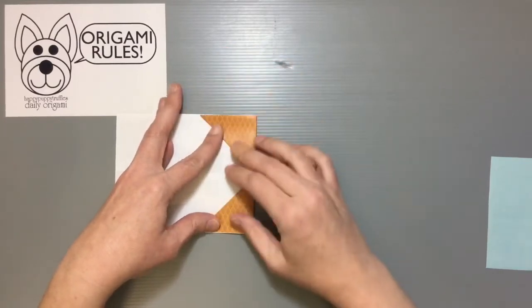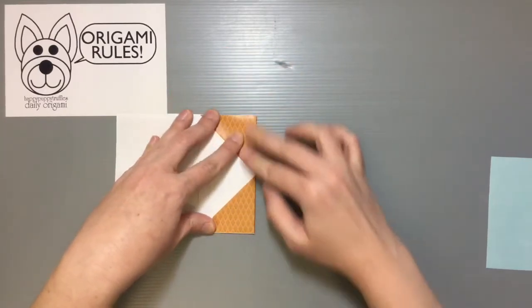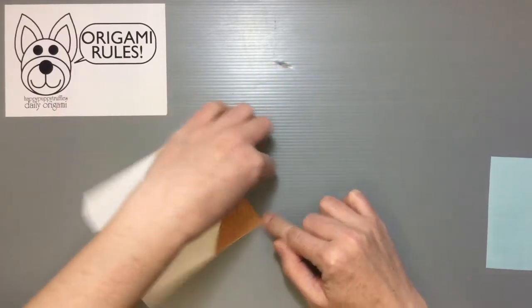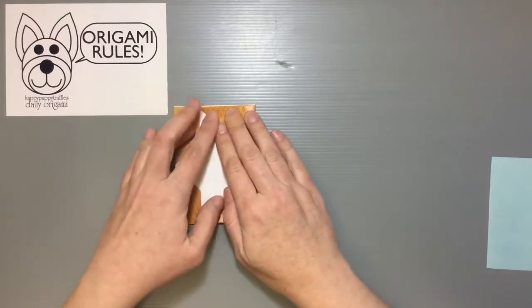But you want to make sure that this part lines up and that this bottom part lines up. It's easy for it to get kind of shifted over. But you want to get that folded over, turn it over, and do the same thing on this side too.